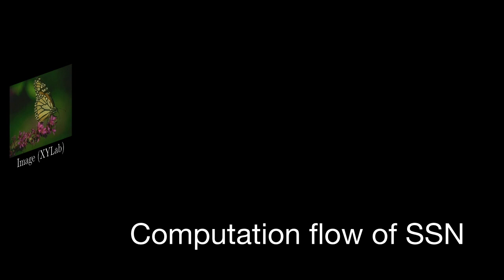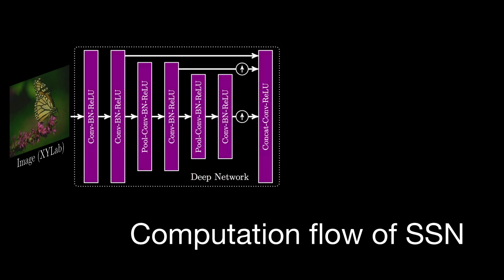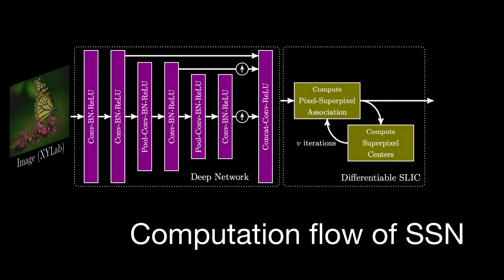A given image is first passed onto a deep network that extracts features at each pixel. These pixel features are then passed onto several iterative updates of our differentiable SLIC to generate superpixels.